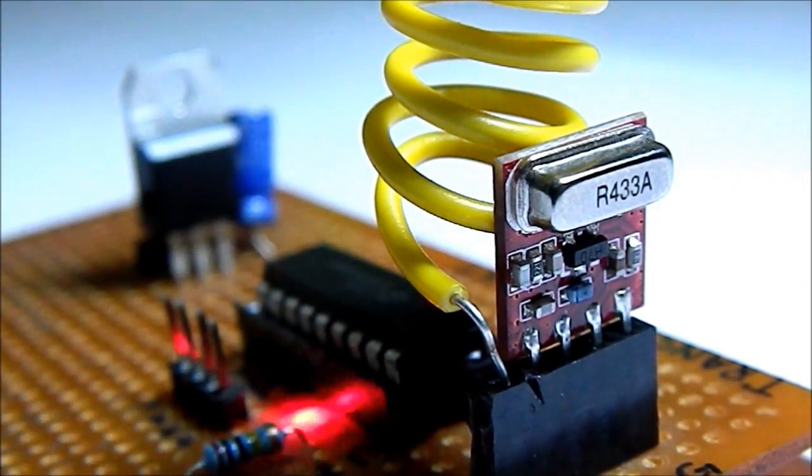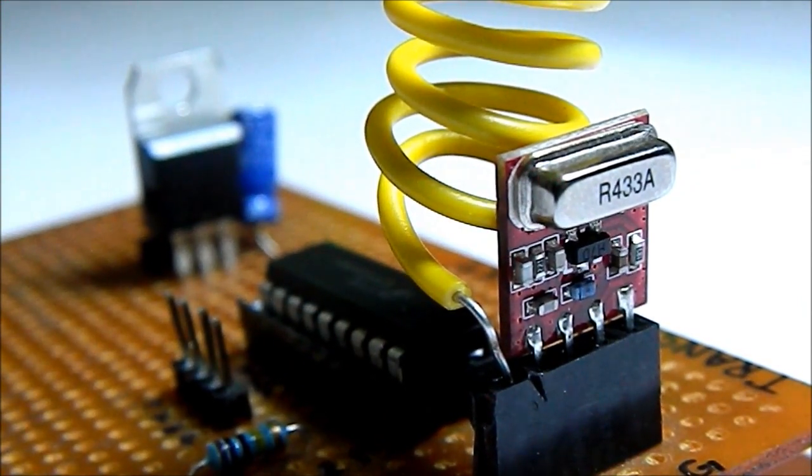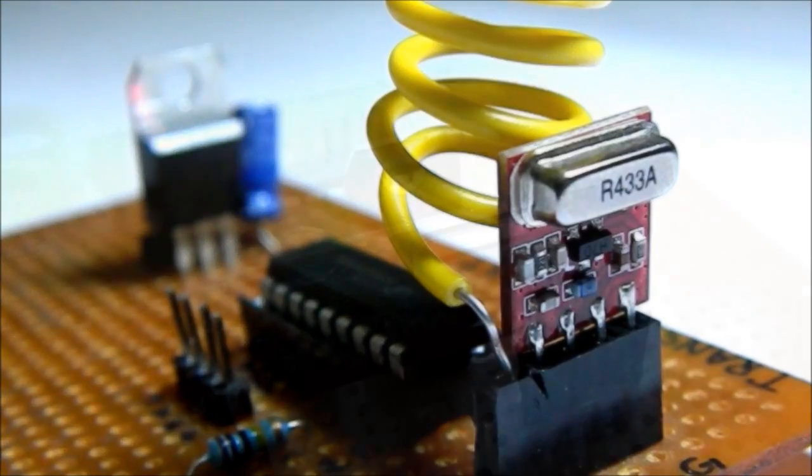The third part is a transmitter unit. It consists of a HT12D encoder IC, a transmitter antenna, and a regulated power supply which gives 5V output.